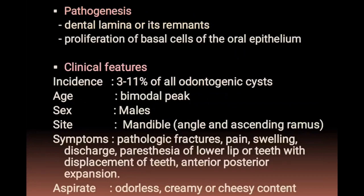In clinical features, OKC has an incidence of 3 to 11% of all odontogenic cysts, with a bimodal peak at the third and sixth decades and a male predilection. It is commonly seen in the angle and ascending ramus of the mandible. Symptoms include pathological fracture, pain, swelling, discharge, paralysis of the lower lip, displacement of teeth, and anterior-posterior expansion. Aspiration yields an odorless, creamy or cheesy content.